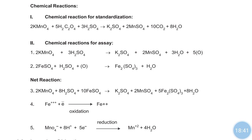For the chemical reaction for assay: KMnO4 plus H2SO4 gives K2SO4 — potassium sulfate — MnSO4 — manganese sulfate — H2O, and 5 molecules of oxygen. Then for the assay of FeSO4, ferrous sulfate plus sulfuric acid H2SO4 plus oxygen gives Fe2(SO4)3 plus H2O.